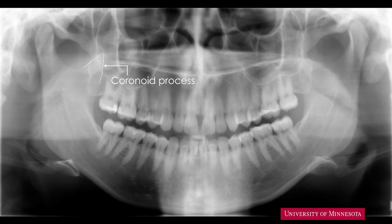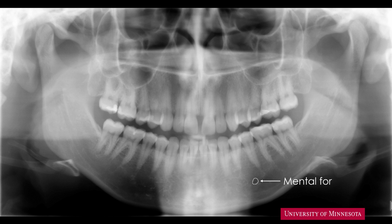Inferior to the sigmoid notch, we can see the parallel lines of the inferior alveolar canal, or the mandibular canal. In this image, the anterior part of the canal is challenging to identify. In many panoramic radiographs, the canal is quite easy to identify, though in many images the outline of the canal is quite faint. On the left side of the mandible, we can see the circular mental foramen. On the right side, the foramen is not adequately visible.